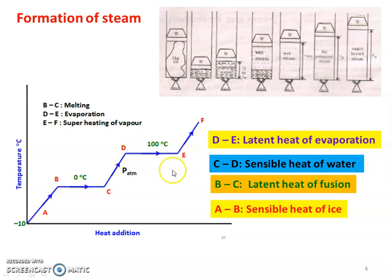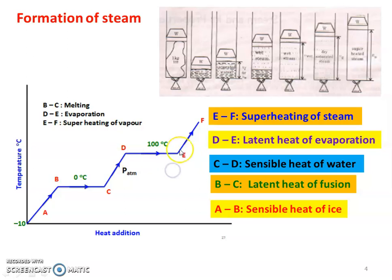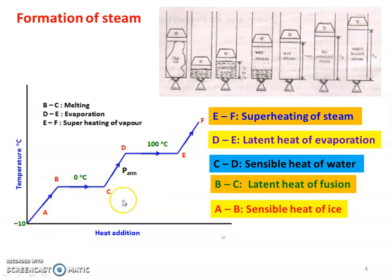At point E, it is dry saturated steam at 100 degrees Celsius. From E to F, the steam temperature continues to increase — this is called superheating of steam. Starting from minus 10 degrees Celsius, the process goes A to B, B to C, C to D, D to E, and E to F — five different stages.